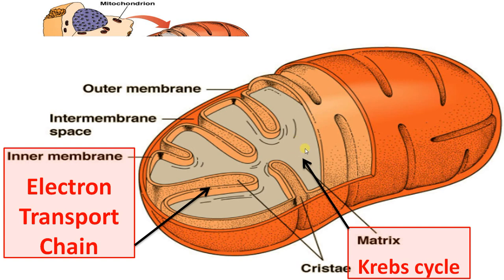The matrix has many enzymes and is the site of the Krebs cycle, whereas the electron transport chain occurs in the inner mitochondrial membrane.